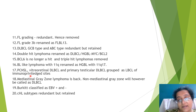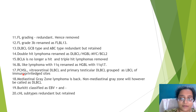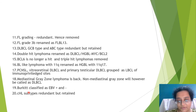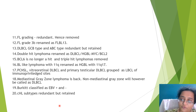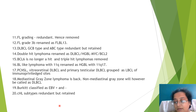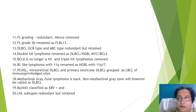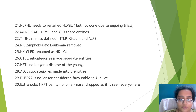Immune privileged site lymphomas - vitreoretinal DLBCLs and testicular DLBCLs - have been added as a category. Mediastinal gray zone lymphoma has been formally introduced. For Burkitt's, EBV association was always known but now they have stressed it and made it a classification criterion. For classical Hodgkin's lymphoma, subtyping is now redundant. NLPHL is now NLBCL - nodular large B-cell lymphoma. These are redundant, not removed - you can still do it if you want to.